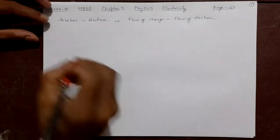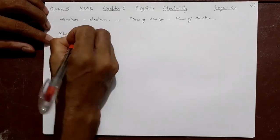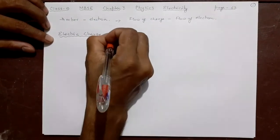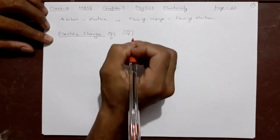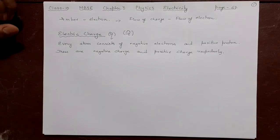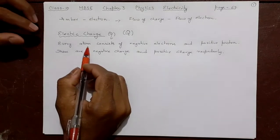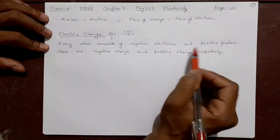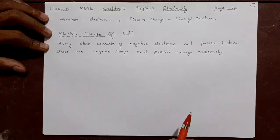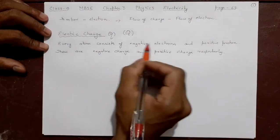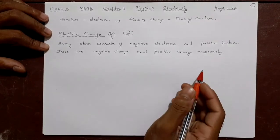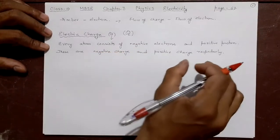The first part will be electric charge. The symbol for electric charge is Q — sometimes capital Q, sometimes small q. Every atom, be it sodium, potassium, hydrogen, or nitrogen, consists of a negative electron and a positive proton. The negative electron is revolving around the nucleus and the positive proton is at the center. An atom is always neutral because the negative and positive charges are equal.